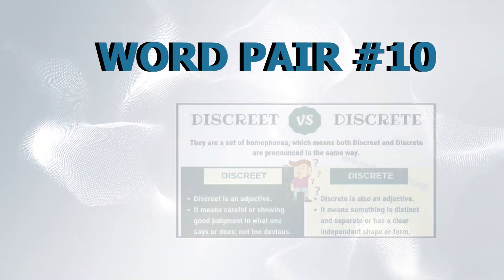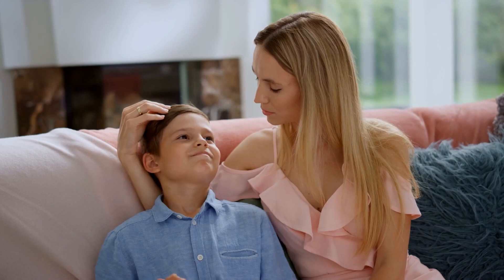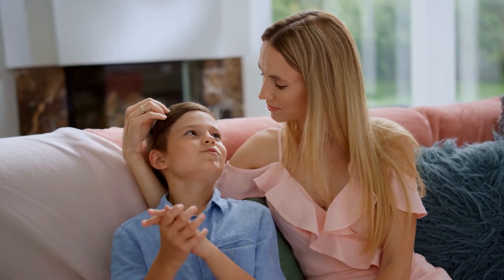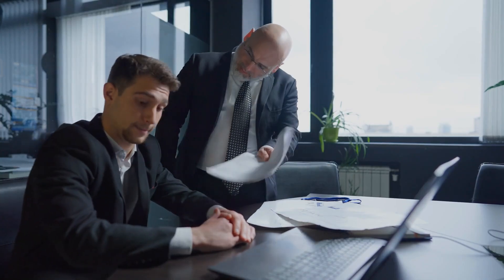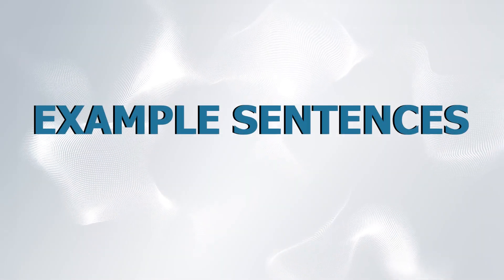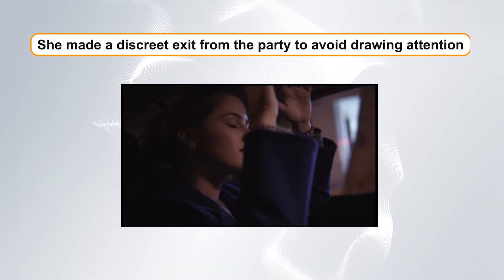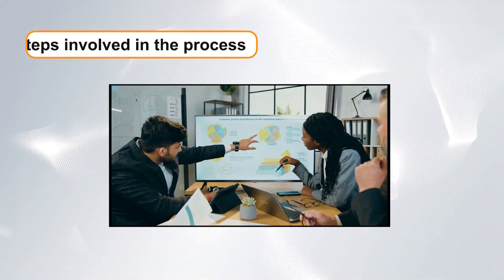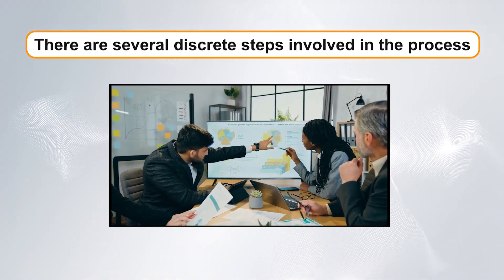Word pair number ten: discreet versus discrete. Our tenth confusing word pair is discreet and discrete. Discreet means to be careful or unobtrusive, while discrete refers to something separate or distinct. Example sentences: One, she made a discreet exit from the party to avoid drawing attention. Two, there are several discrete steps involved in the process.